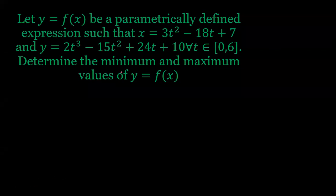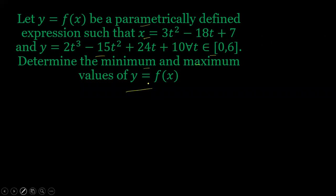What we have given here is that y is equal to f of x, defined by parametric expressions: x is equal to some expression and y is equal to some expression, for t belonging to 0 to 6. So, we need to find the minimum and maximum value of y = f(x).